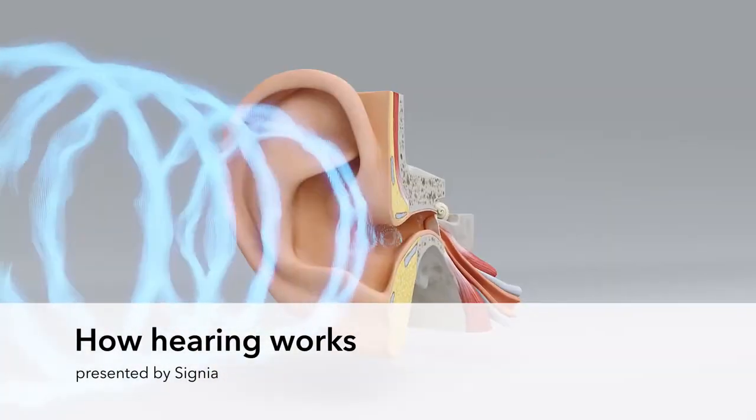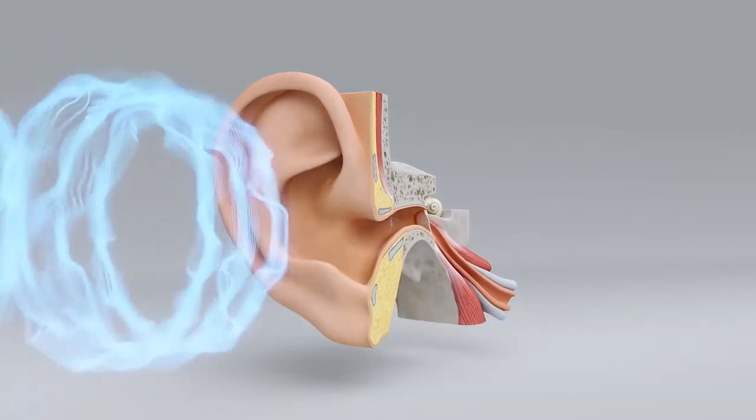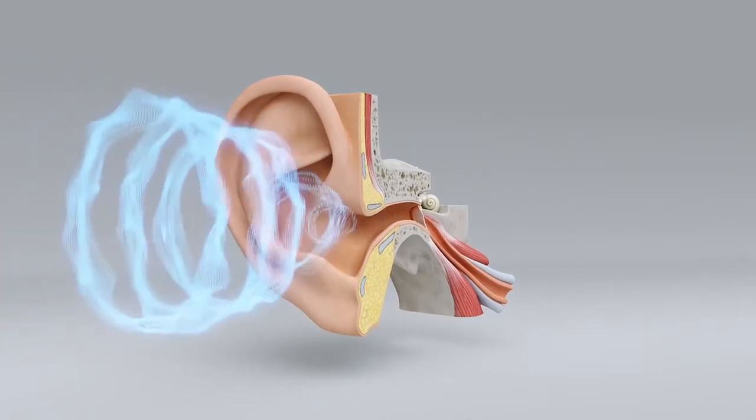Sounds are collected by the outer ear, which consists of the auricle and the external auditory canal. The sound is guided through the ear canal to the middle ear.